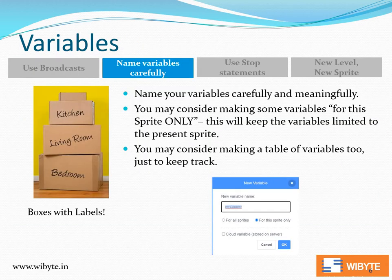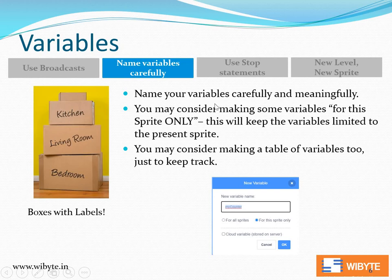Now talking about variables — variables are basically labeled boxes that sprites use to store information. Sprites can open these boxes to access that information. The challenge is that when you have lots of boxes, you have to be very careful about which box contains what. This is why you should name your variables carefully and meaningfully. If you are using variables for all sprites, make sure their names are different — for example, 'cat counter,' 'mouse counter,' 'mouse speed,' 'cat speed' — so you know what they mean.